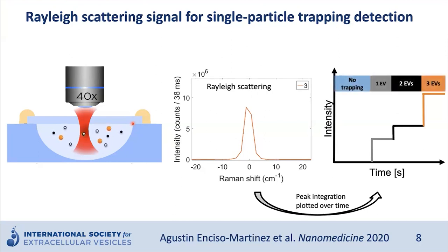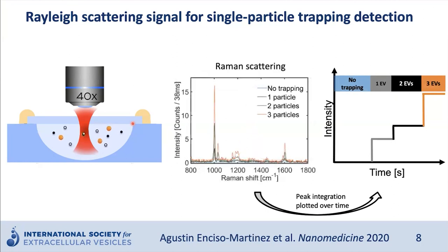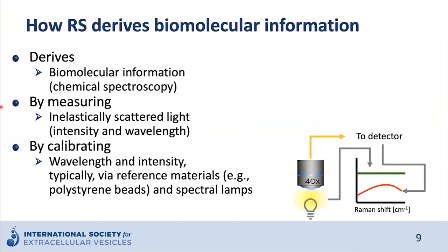This can be visualized as a step increase when the Rayleigh scattering signal is plotted over time. Here you can see a zoom-in of a protein peak — the phenylalanine side chain at 1,000 wavenumber — and you can see it increasing as multiple particles are trapped.